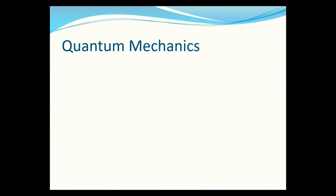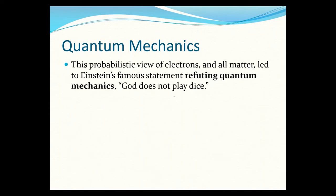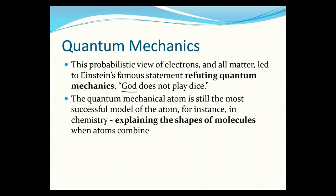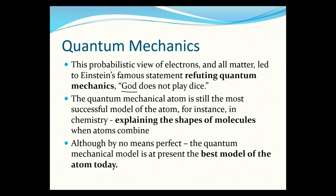We'll end the course with this probabilistic view of electrons and matter, which led to Einstein's famous statement refuting quantum mechanics: 'God does not play dice.' Einstein hated the idea that everything is based on probability. The quantum mechanical model is the most successful model in chemistry for explaining molecular shapes and atomic bonding — and though it's not perfect, it's the best model we have today. Perhaps in 20 years, students will develop an even better model.